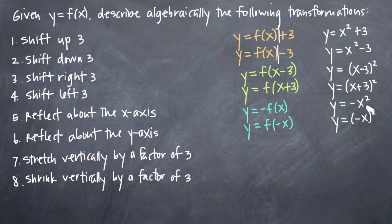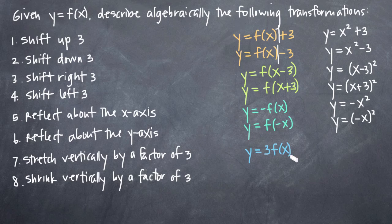And finally, if we want to stretch vertically by a factor of 3 or shrink vertically by a factor of 3, then our functions look like this. To stretch vertically, we want to say y equals 3 times f of x. That means every y coordinate on our original function x squared will now be 3 times what it was in the original function.